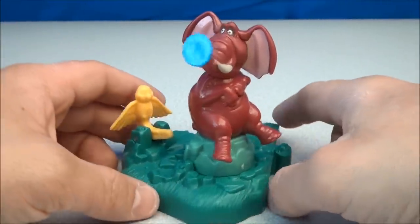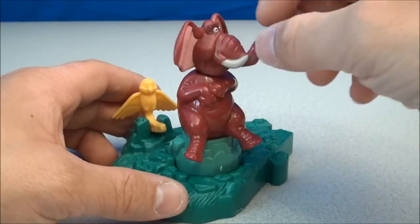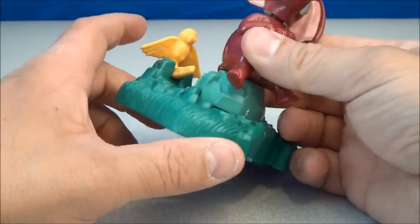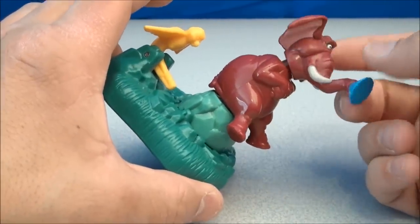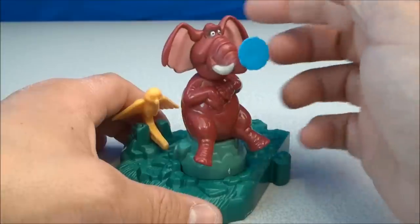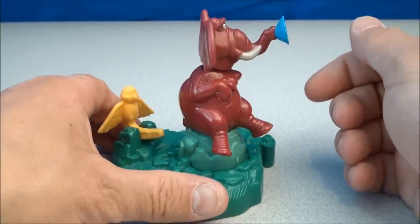Next up is Tantor, spinning figurine with base. So we've got Tantor who comes off of this. You can hold him in your hand if you want. But he's got a really fun little bobble-headed type deal. He's got a little spray of water coming out the trunk.